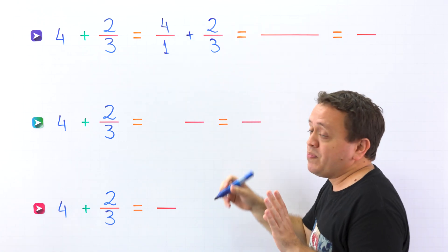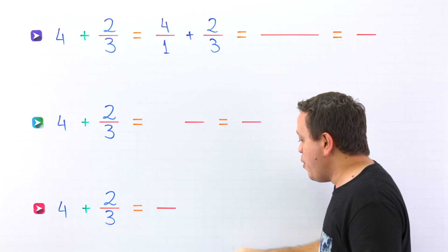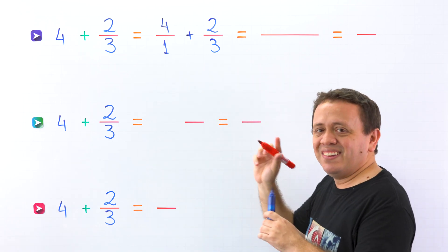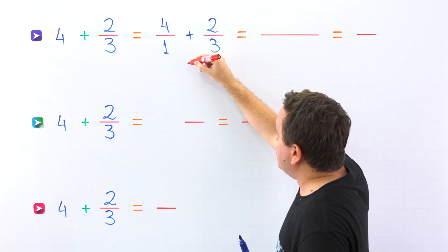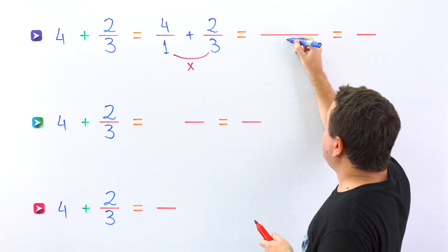Now we need to add these two fractions, and there are several methods to add fractions with unlike denominators. However, I like to use the cross products method. First, we multiply the denominators. 1 times 3, this is 3.